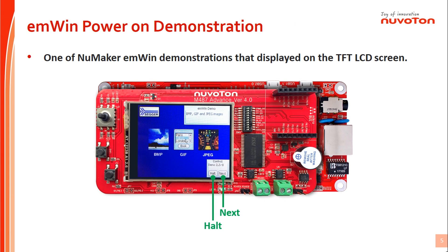When users get this NuMaker EMWIN N487 board and plug in a USB cable to connect the ICE, they can see NuMaker EMWIN demonstrations on the TFT LCD screen. The firmware of these demonstrations was programmed into the internal flash of the M487 JIDAE target chip by Nuvoton before the board is delivered. Users can press the hold icon on the bottom right of the TFT LCD screen to hold the current demonstration, or press the next icon to jump to the next demonstration program.